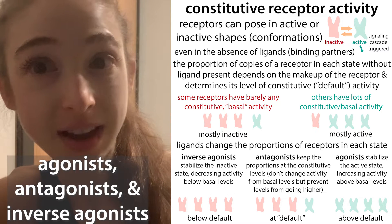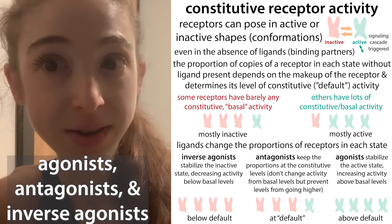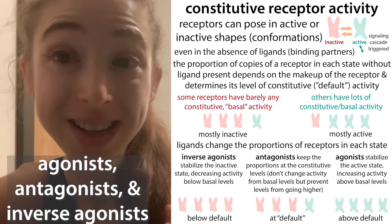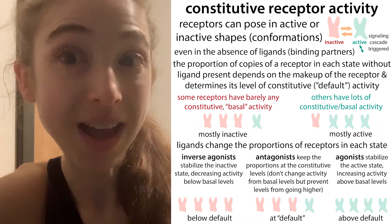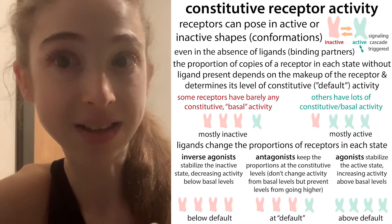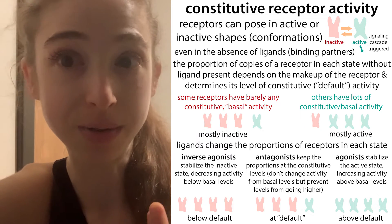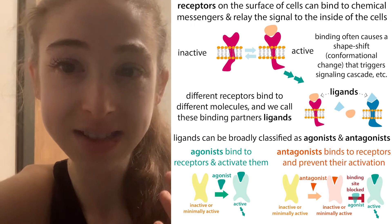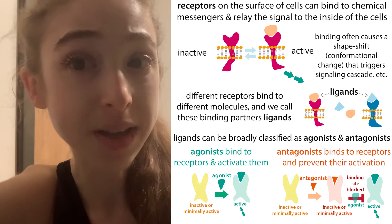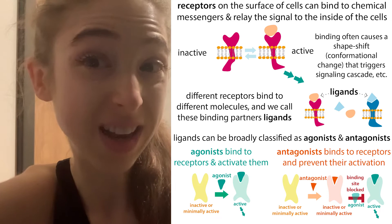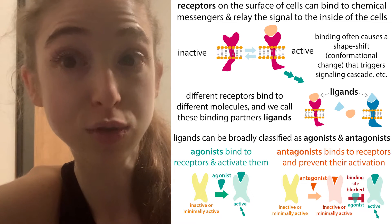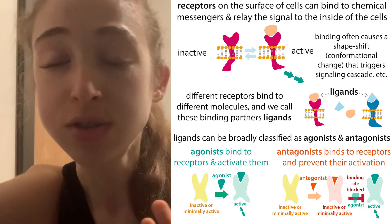Some cellular receptors are pretty much always active, signaling even in the absence of an activating molecule — what we call an agonist. And this complicates our traditional ideas about how these receptors work.